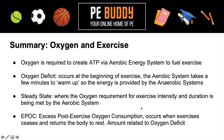Here's a quick summary. Oxygen is required to create ATP — the body's energy currency — via the aerobic energy system to fuel exercise. Oxygen deficit occurs at the beginning of exercise because the aerobic system takes a few minutes to warm up; in the meantime it's covered by the anaerobic systems: ATP-PC and anaerobic glycolysis. We then hit steady state, where the oxygen requirement is being met comfortably by the aerobic system at around 50 to 70% of max heart rate. As soon as we finish exercise, we hit EPOC — Excess Post-Exercise Oxygen Consumption — which returns the body to rest. The amount is related to oxygen deficit, but not the same.